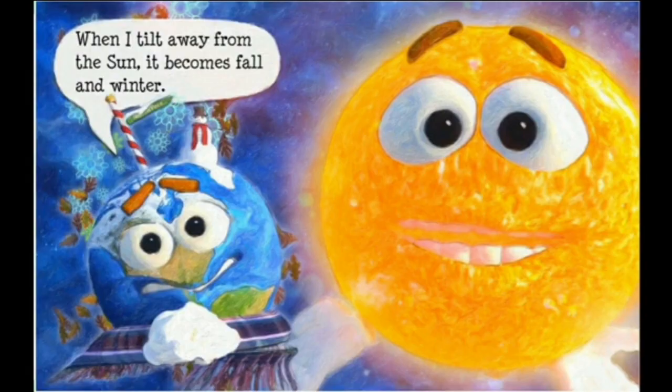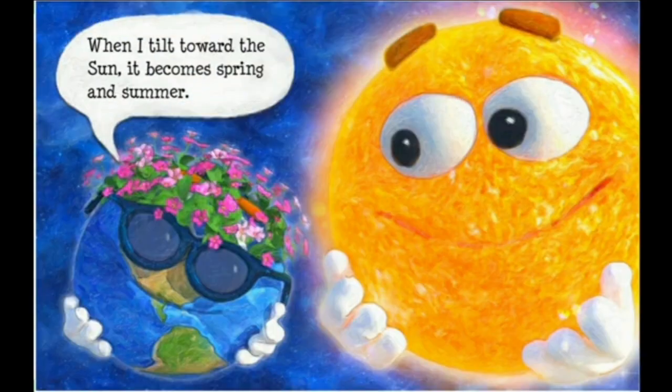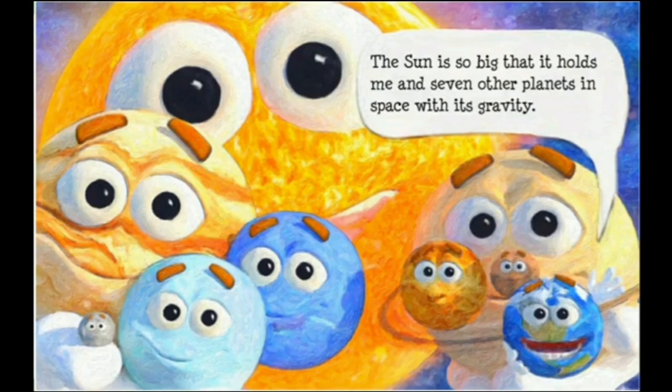'When I tilt away from the Sun it becomes fall and winter, when I tilt towards the Sun it becomes spring and summer.' That's why we have seasons. The Sun is so big that it holds Earth and seven other planets in space with its gravity.